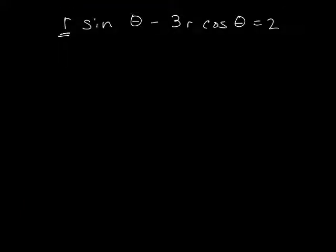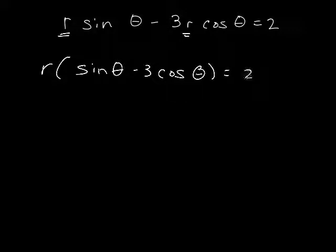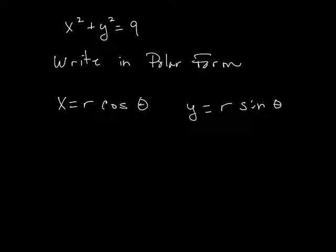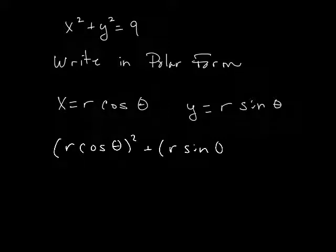Again, R is the greatest common factor. Factor out R. And remember, it's because we're solving for the polar coordinates. All of that is equal to 2. So now I have my polar equation.